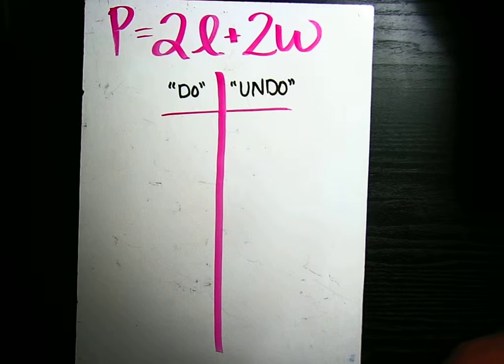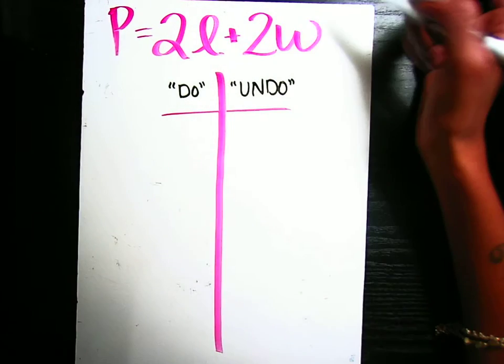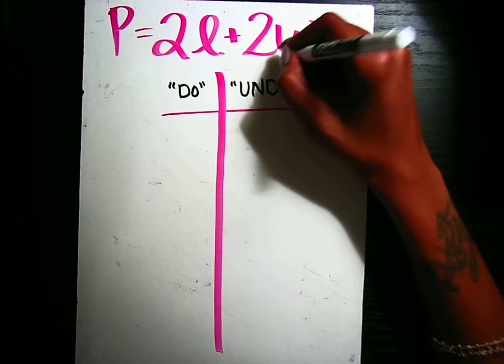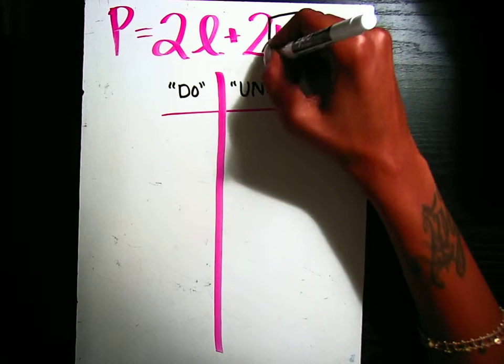We're going to practice setting up the do-undo chart to solve an equation. The first thing we want to start with is our equation. So P is equal to 2L plus 2W.